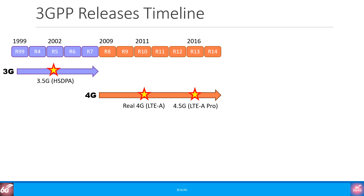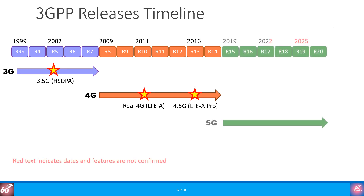As a result, 3GPP enhanced the standards and Release 10 was called LTE Advanced, or Real 4G. There were further enhancements like Release 13, which was called 4.5G or LTE Advanced Pro. The first release of 5G was Release 15 in 2019. Release 15 had three drops of 5G; the third and final drop, which is now the de facto for 5G rollouts, was in 2019.